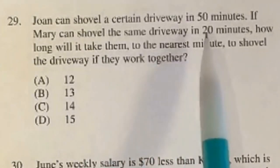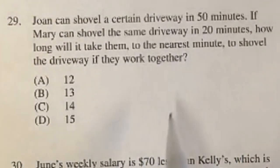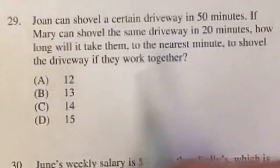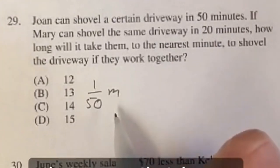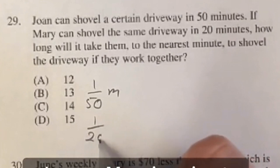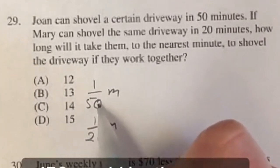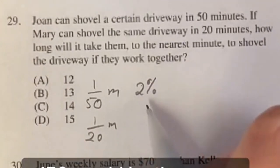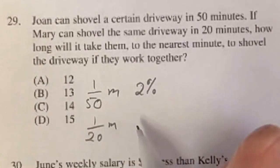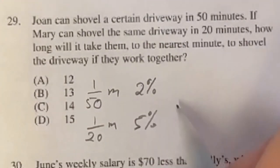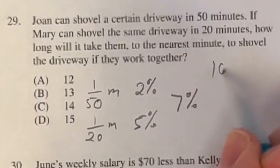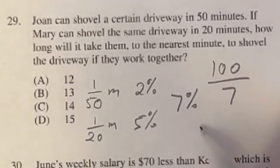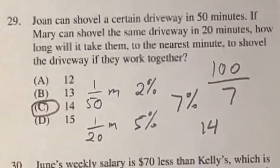Number 29: Joan can shovel a driveway in 50 minutes, Mary in 20 minutes. How long together? Joan does 1/50 of the driveway per minute, which is about 2% per minute. Mary does 1/20, which is 5% per minute. Together they do 7% per minute. To complete 100% of the driveway, divide 100 by 7, which is about 14.2 minutes. So the final answer is approximately 14 minutes, answer C.